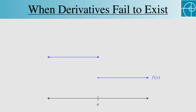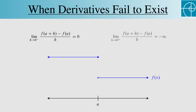Now let's consider this function. Once again, the secant lines as we approach a from the left are all horizontal, so the left-handed limit is 0. But the secant lines as we approach a from the right get steeper and steeper, so the right-handed limit is negative infinity. Once again, since these two limits aren't equal, the derivative doesn't exist at a.